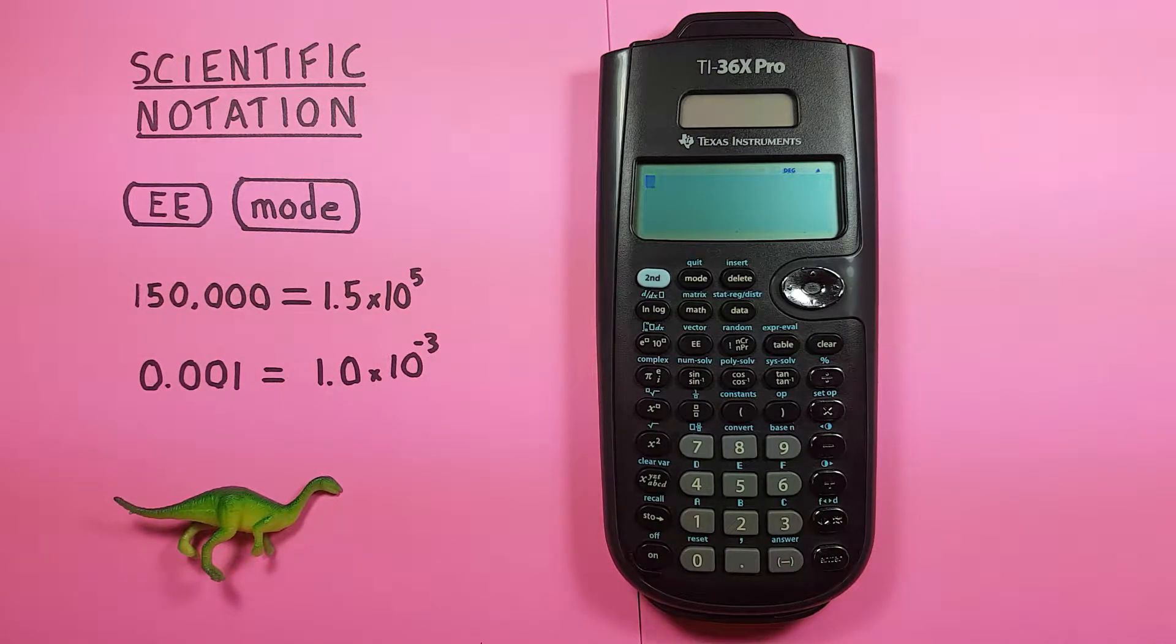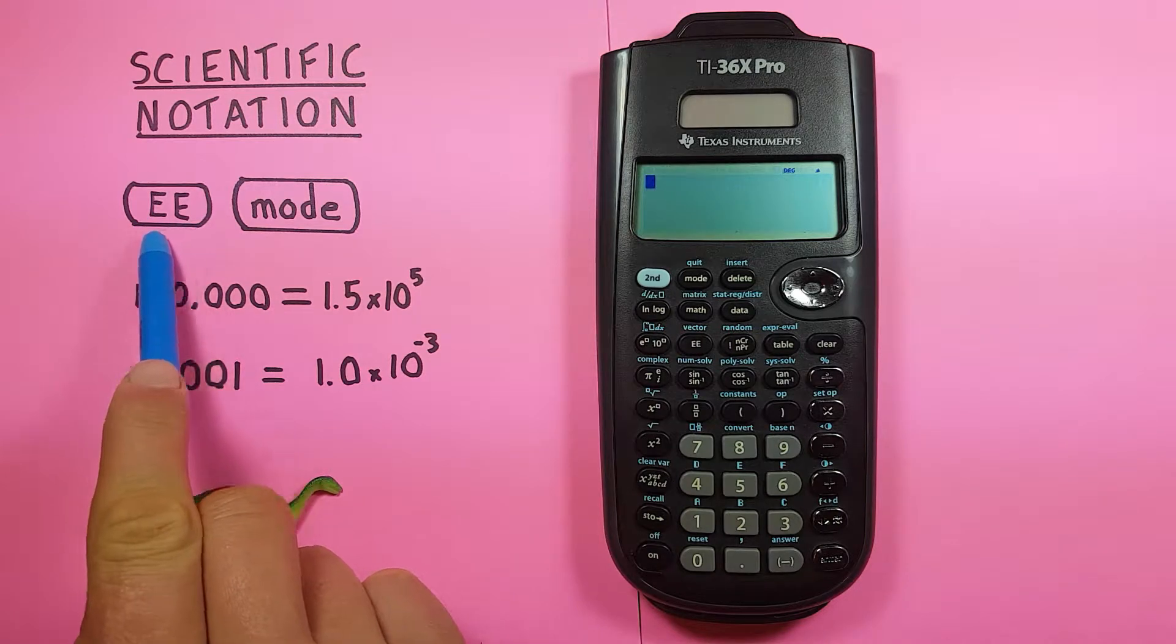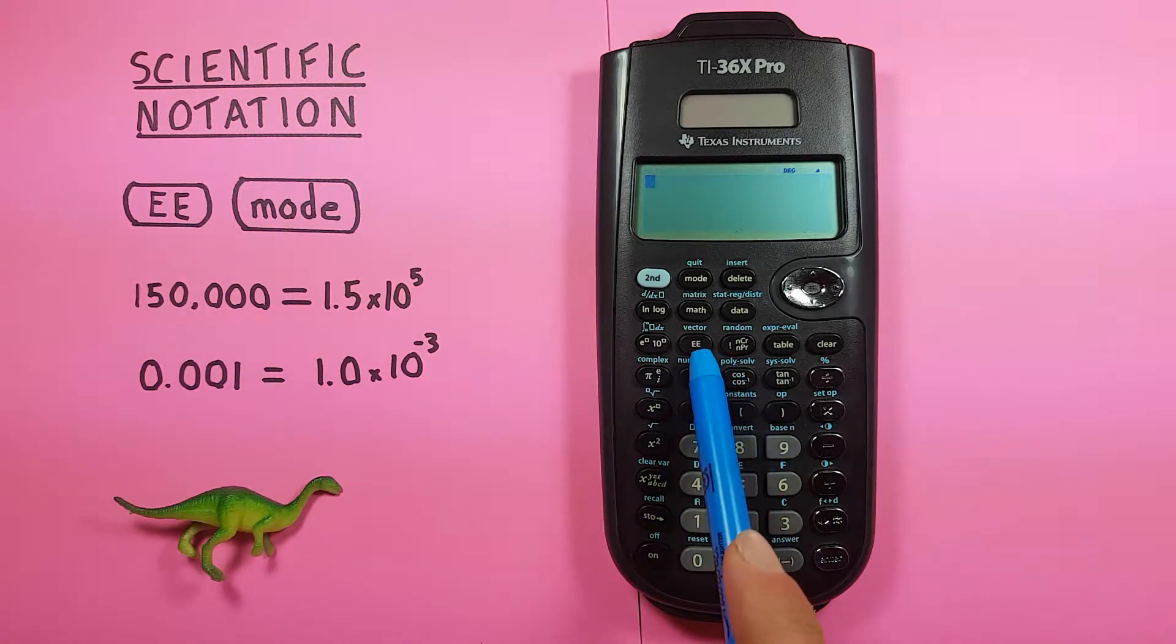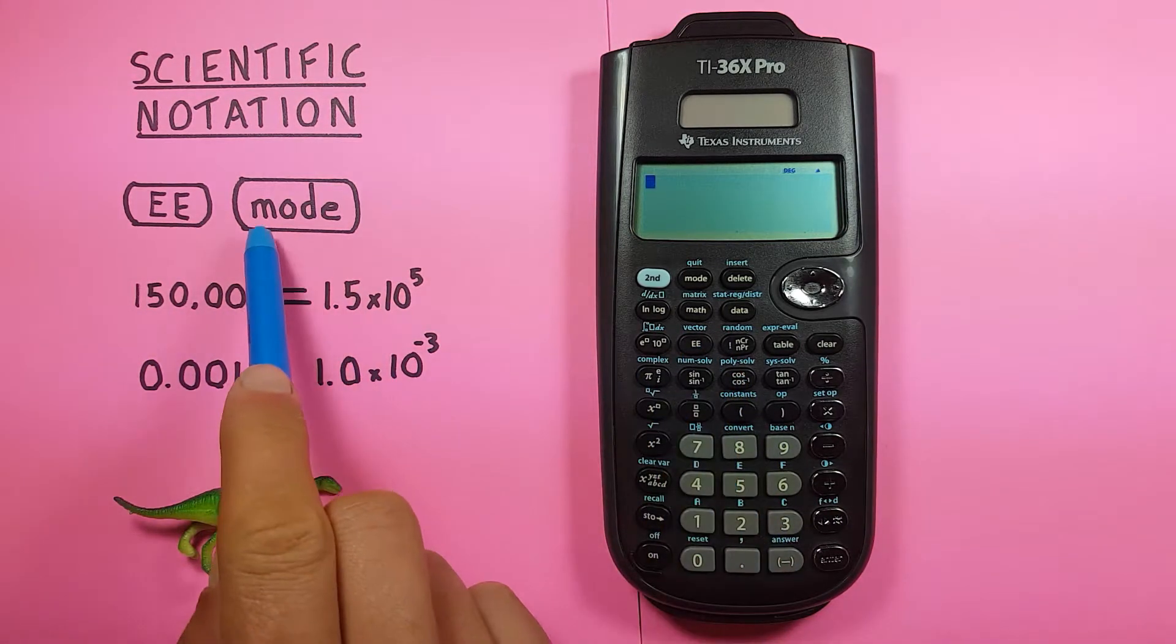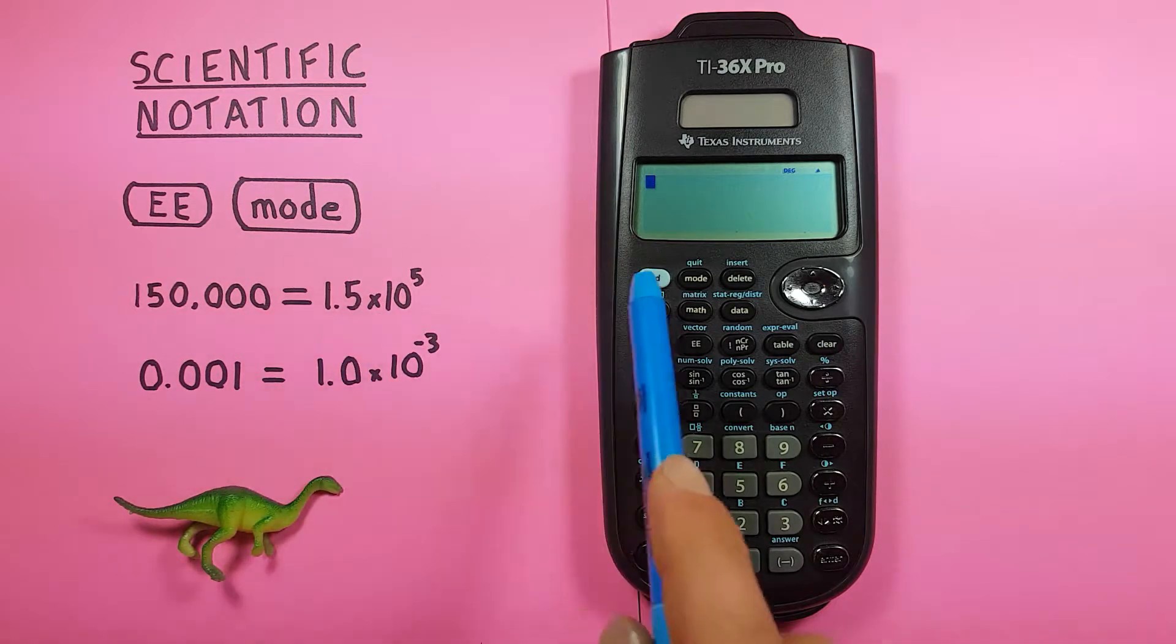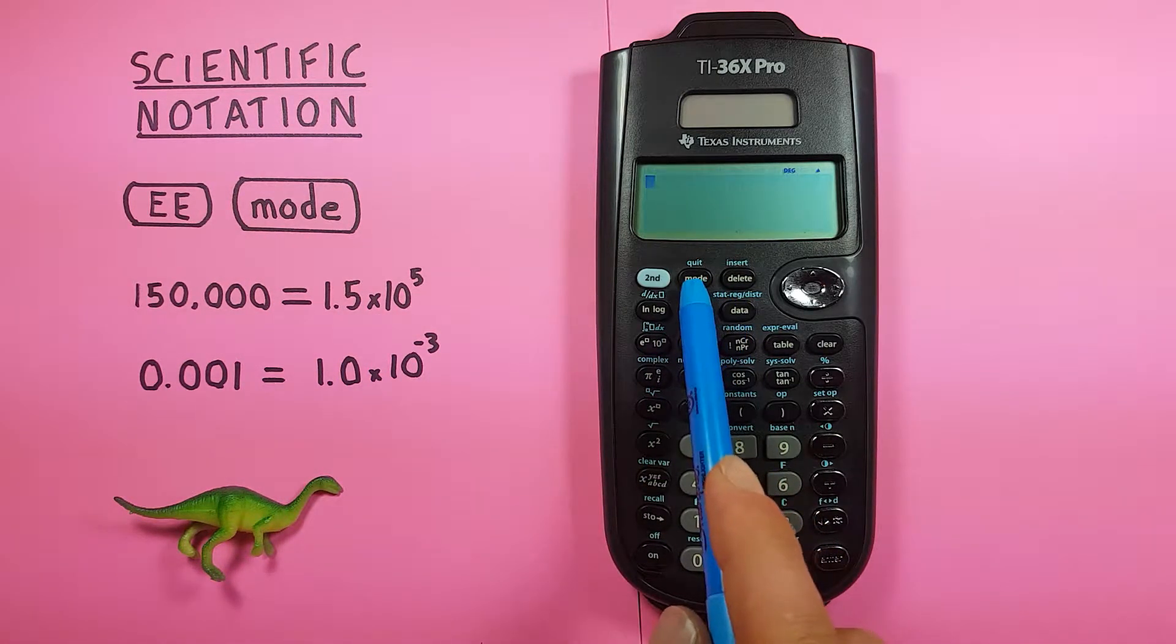To get started we'll be using the EE key, looks like this, located here on the calculator, as well as your mode key, looks like this, and is located up here beside the second function key.